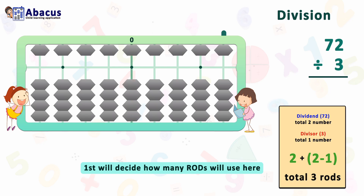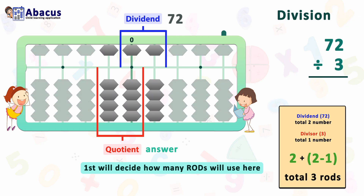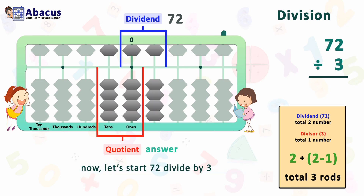This is the unit rod of the abacus. From the unit rod to the right side, two rods are for dividend 72. We have one remaining rod, which is to the left of the unit rod. For the quotient there are two rods: this one rod and the unit rod. Keep in mind the quotient always completes on the unit rod. These three rods will be used and the answer is on the ones and tens rod. Now let's start 72 divided by 3.